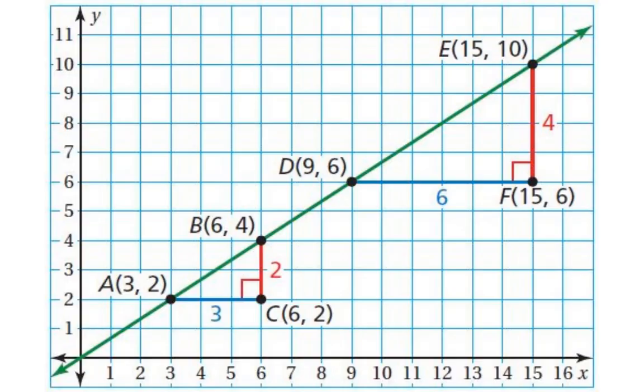Here we can see this green line goes through these four points that are all labeled, A, B, D, and E. Points C and F are just there to help us to realize what we know about these triangles, and to calculate rise and run and such.